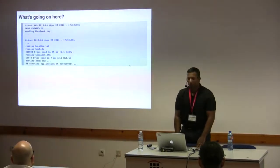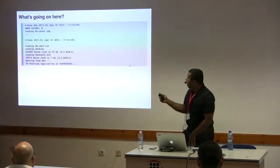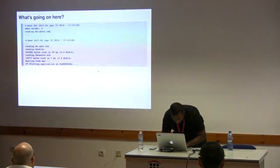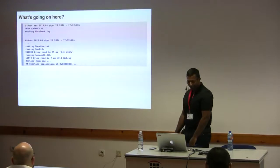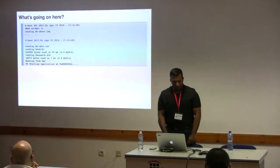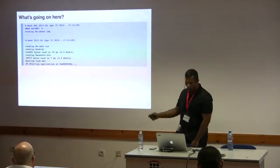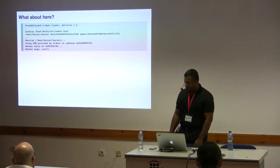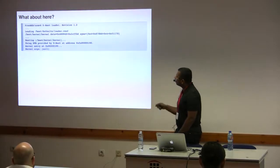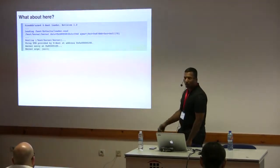Looking back at the boot output, there are a couple versions of U-Boot that run: SPL, and then the real U-Boot. Then the U-Boot loader loads the kernel, and it uses something called a DTB — a device tree blob — which we'll talk about.